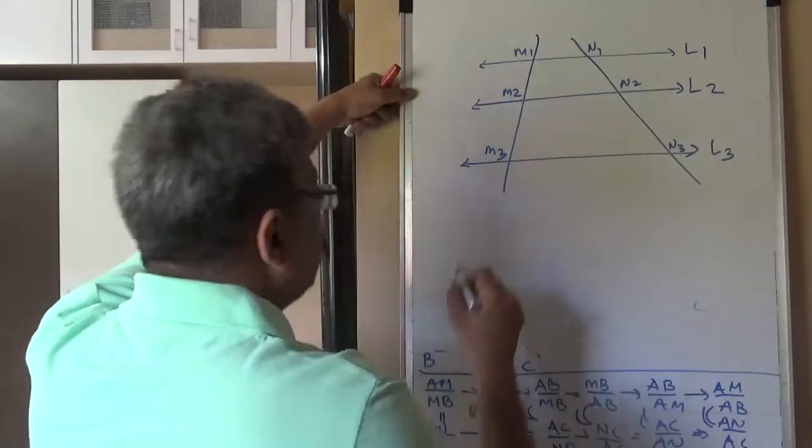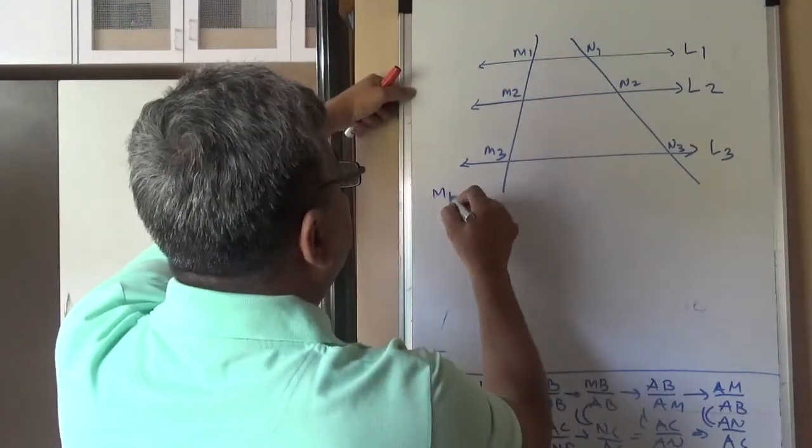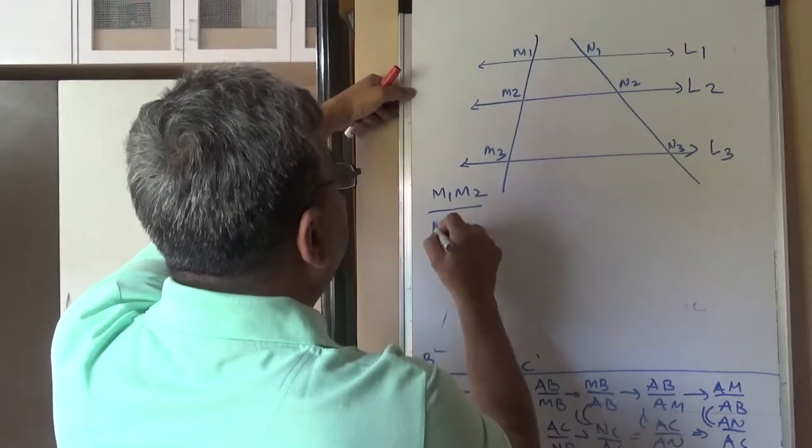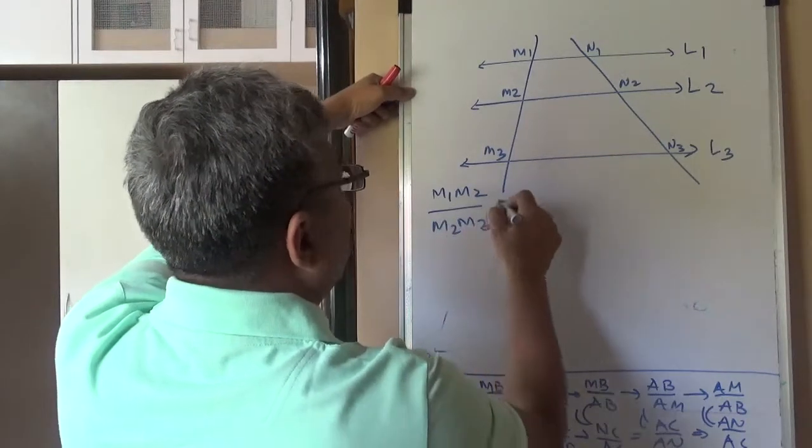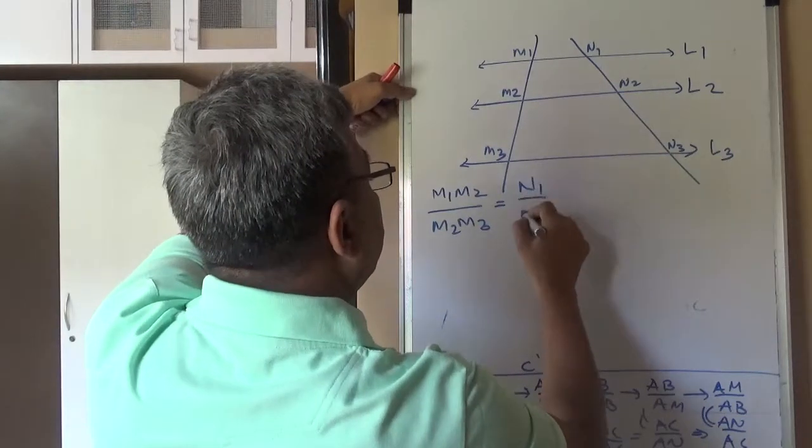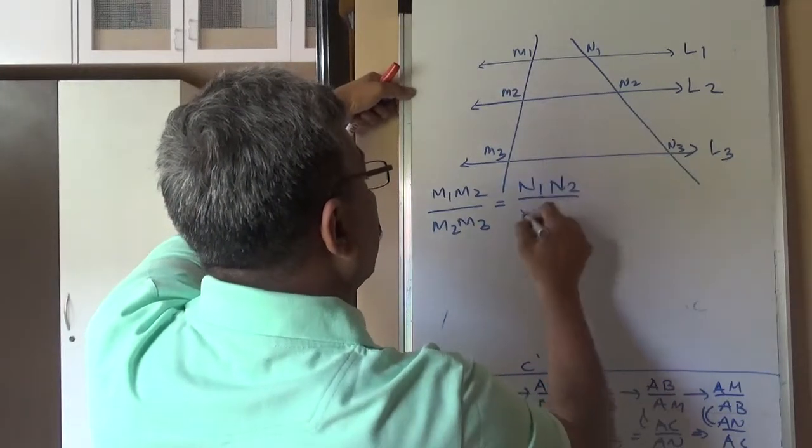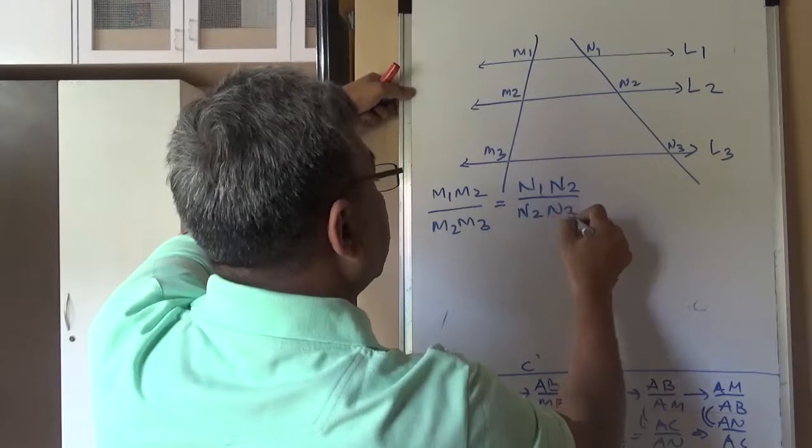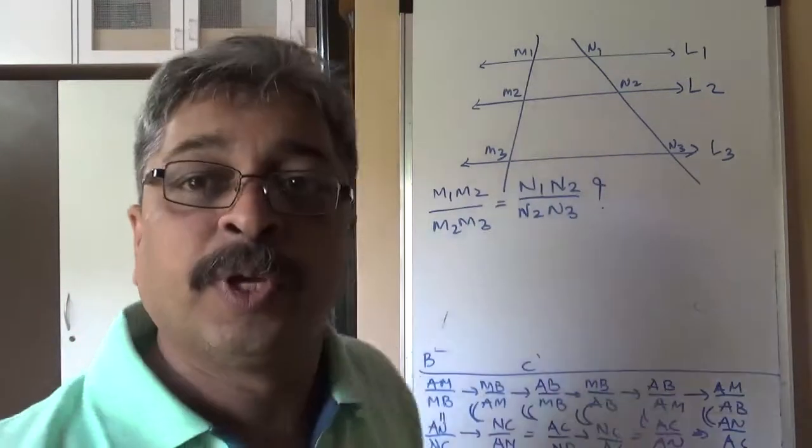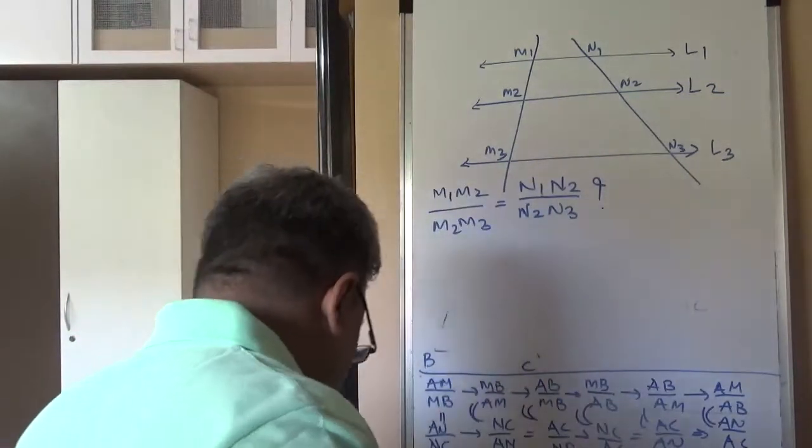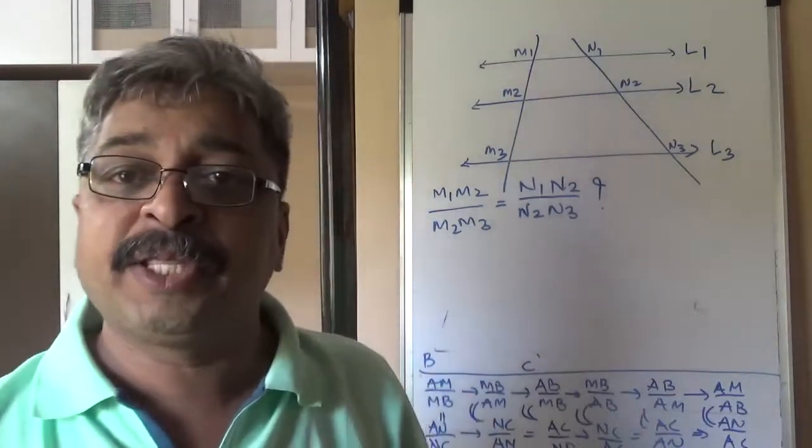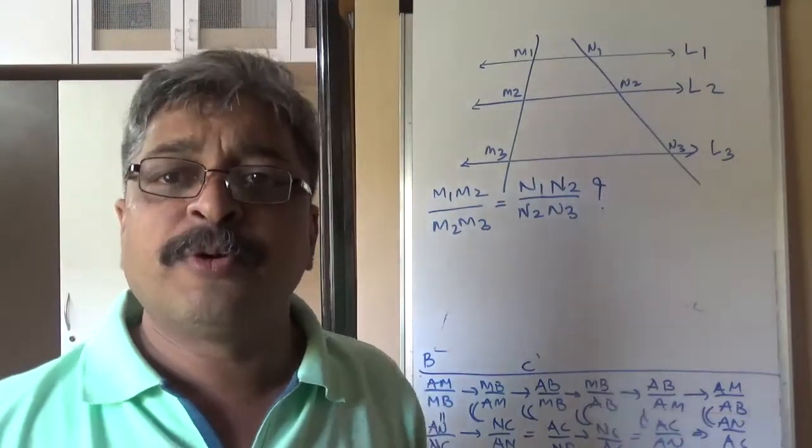Known as M1, M2, M3, N1, N2, N3. We have three parallel lines. They are intercepted by two transversals. Then, we are supposed to prove M1M2 upon M2M3 always equals N1N2 upon N2N3. This is what is supposed to be proved. Equal intercept theorem. This is equal intercept theorem.